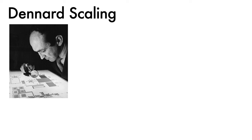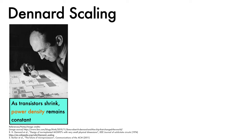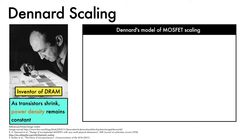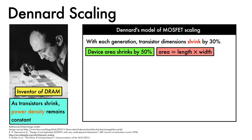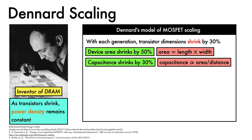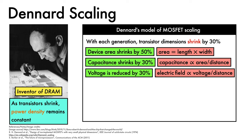Another key trend was noted in 1974, when Robert Dennard and co-authors observed that as transistors continue to shrink, power density remains approximately constant. Dennard was prolific — he also won the Kyoto Prize for having invented DRAM eight years before introducing his scaling model. In Dennard's model of MOSFET scaling, with each generation the transistor shrinks along each dimension by 30%, reducing the device area by 50%, and its capacitance shrinks by 30% because capacitance scales with area over distance. Voltage can be reduced by 30% to keep the same electric field.